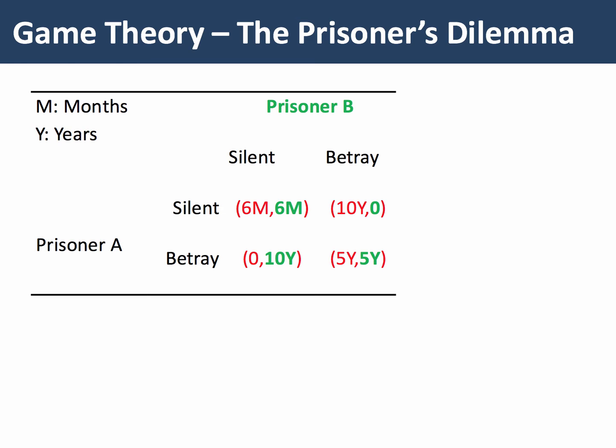They're both suspected of a crime and they can either confess to the crime or they can deny — in other words, they can either choose to remain silent or they can betray each other. The payoff shown in this matrix table are years or months in prison from their chosen course of action.